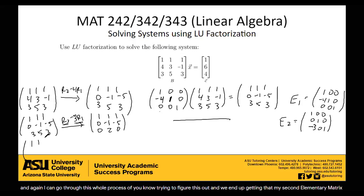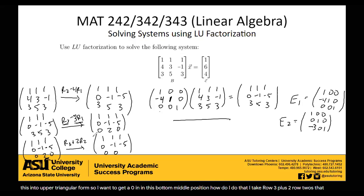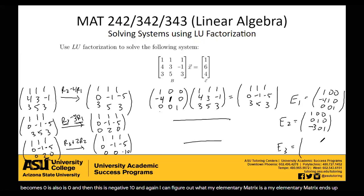Then we have one more step. I want to get a 0 in the bottom middle position, so I take row 3 plus 2 times row 2. That position becomes 0, and the result is 0, 0, negative 10. My elementary matrix E3 ends up being: 1, 0, 0; 0, 1, 0; 0, 2, 1 — because I'm taking 2 of row 2 and 1 of row 3.